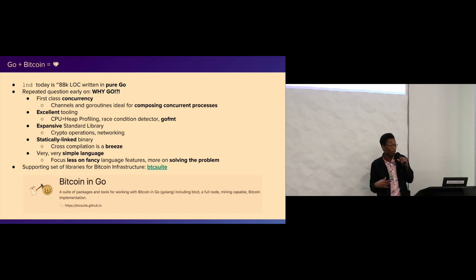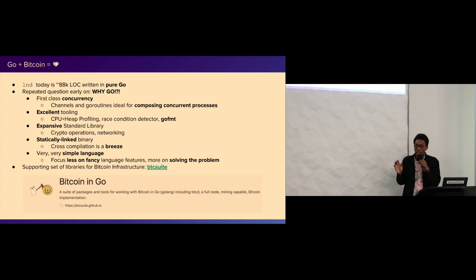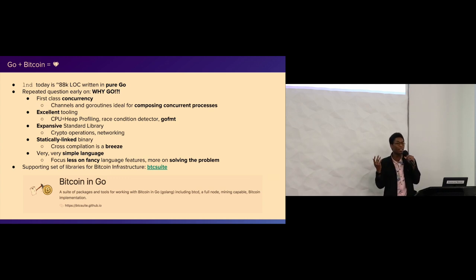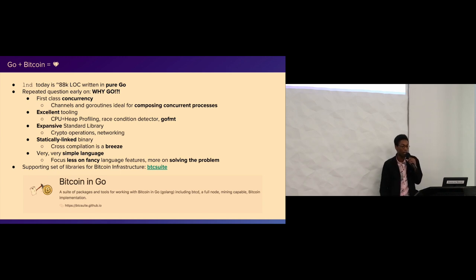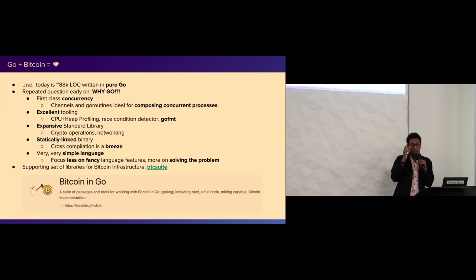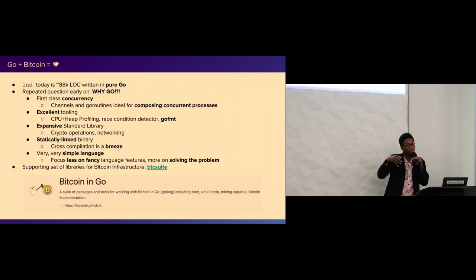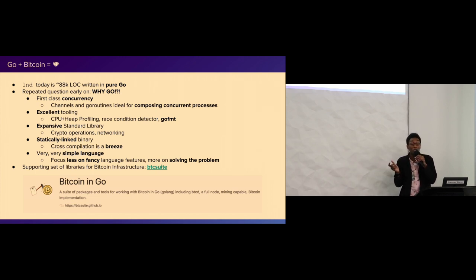The standard library is super comprehensive - it has everything: every crypto thing you need, networking, its own SSH in pure Go, TLS, basically everything you ever need to do anything Bitcoin-related or concurrent programming. Another cool thing is it produces statically linked binaries by default, so I can just have the binary and take it anywhere. I can also cross-compile super easily for any platform at all, and you usually never even need to modify your code.